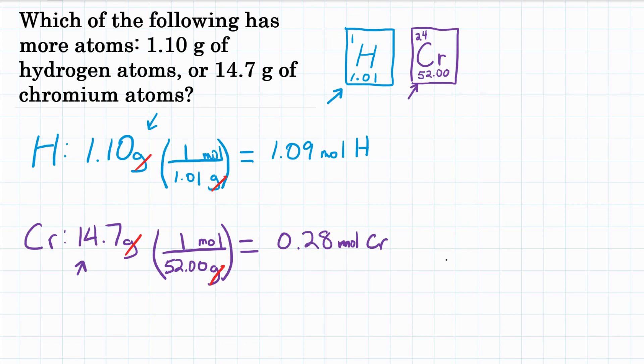Now we could take this one step further by actually calculating the number of atoms. We would multiply by our conversion factor for each of these, where 1 mole would be on the bottom and Avogadro's number, or 6.02 times 10 to the 23rd, would be on top.